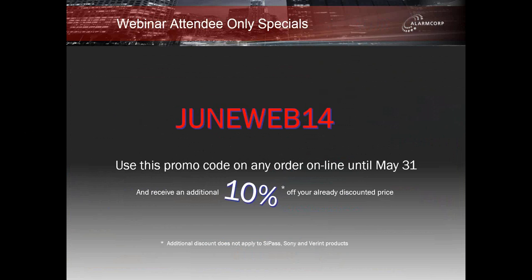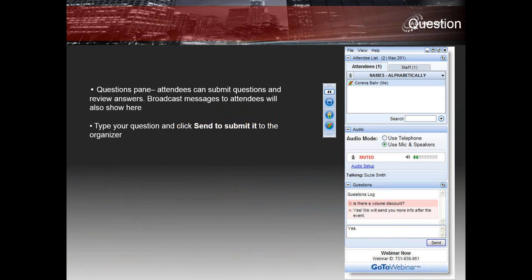When you attend one of our webinars you'll have access to special promotions. For purchases made online through our e-commerce platform, please enter the promo code shown on the screen during checkout to receive an additional 10% off your already discounted trade prices. This applies to nearly all of Alarmcorp's product ranges with a few exceptions as listed.